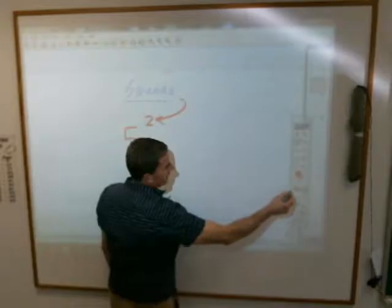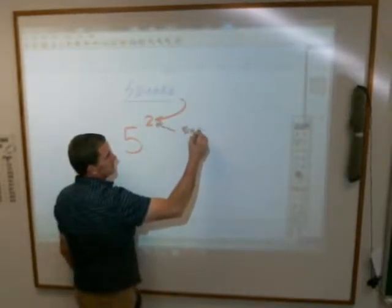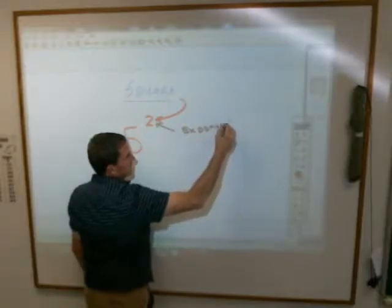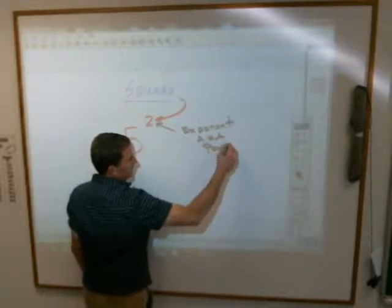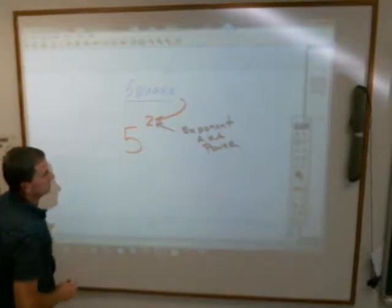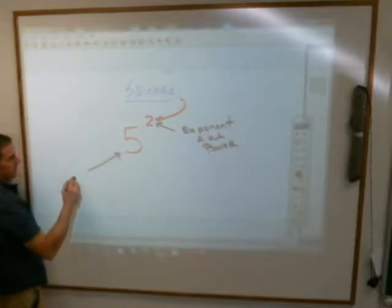A 2 is what we call an exponent or a power. 2 is that exponent or power. The number 5 here is our base number.